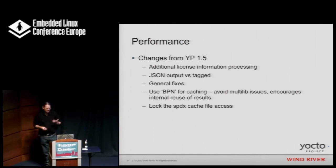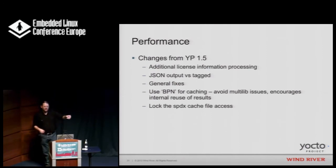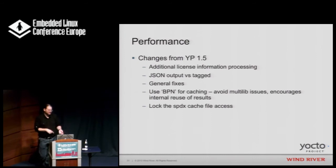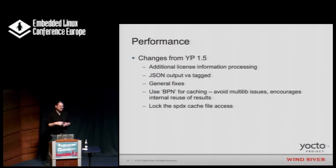I discovered a caching issue: the cache file was keyed on package name, so in a multi-lib configuration building for 32-bit and 64-bit simultaneously, or building the same source for host and target, the files were processed twice. A simple optimization was to use the BPN (base package name) instead. Additionally, if the same thing had to be processed multiple times simultaneously, there was no locking, so concurrent processes would all overwrite each other. A simple lock file fixed that.